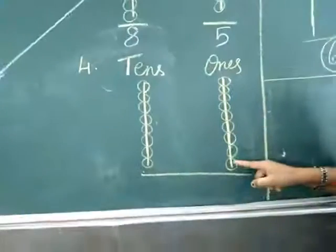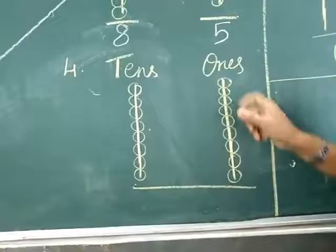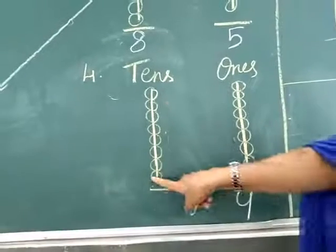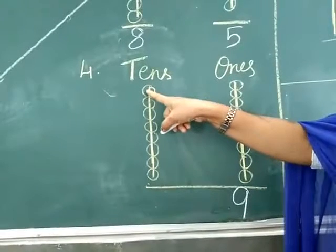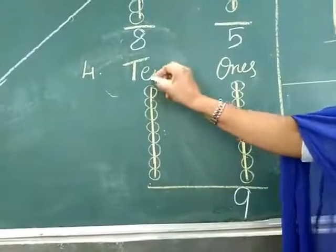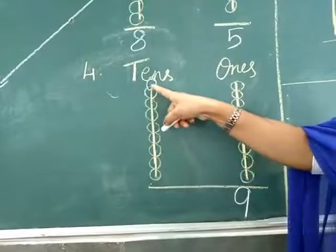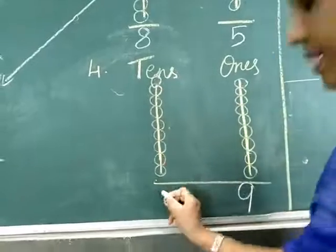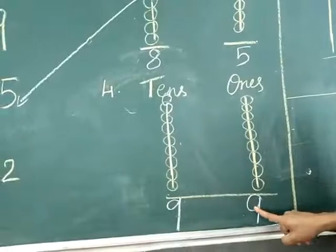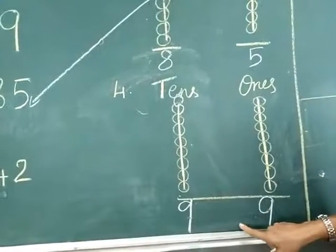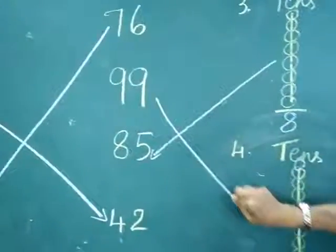Now count the ones place: one, two, three, four, five, six, seven, eight, nine — nine ones. And again the tens place: one, two, three, four, five, six, seven, eight, nine — nine tens. Nine tens and nine ones is equal to ninety-nine. Where is ninety-nine? Yes, just below seventy-six is ninety-nine.